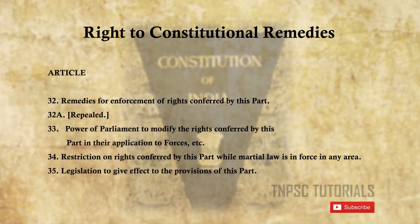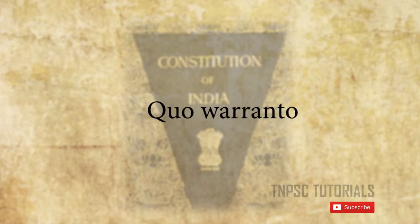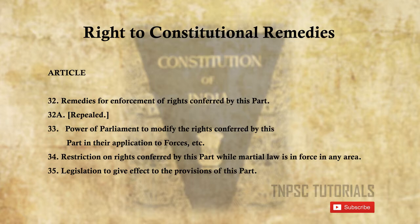The last one is Right to Constitutional Remedies, covering Articles 32 to 35. Article 32 gives the right to move the Supreme Court for enforcement of fundamental rights through the writs of habeas corpus, mandamus, prohibition, certiorari, and quo warranto. Article 33 empowers Parliament to restrict the fundamental rights of members of armed forces, paramilitary forces, police forces, intelligence agencies, and analogous forces to ensure proper discharge of duties and maintenance of discipline. Article 34 provides for restrictions on fundamental rights while martial law is in force within the territory of India. Article 35 lays down the power to make laws to give effect to specified fundamental rights.